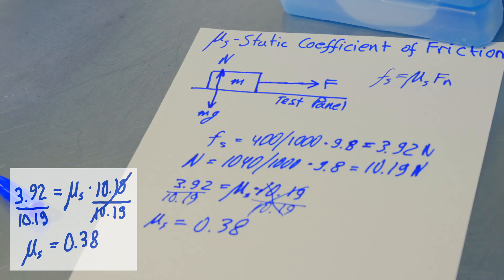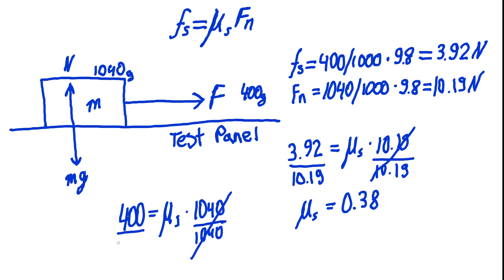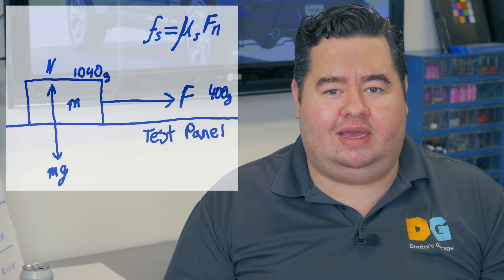To simplify, we don't actually have to convert to newtons because gram-force can also be a unit of measure. In our test we'll just use grams since everything we're measuring is in grams. This might be interesting if you're thinking about the contact patch on your tire — we all know a bigger tire makes more grip — but notice that area is nowhere in this formula.